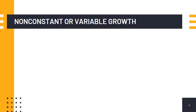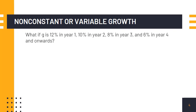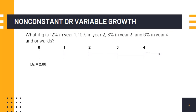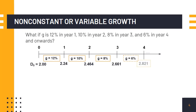In real life, growth rates are rarely constant. For non-constant or variable growth, consider the following growth rates: 12 percent in year one, 10 percent in year two, 8 percent in year three, and 6 percent in year four and onwards. We first compute dividends each year: D-sub-zero is $2.00; D-sub-1 is $2.00 × 1.12 = $2.24; D-sub-2 is $2.24 × 1.10 = $2.464; D-sub-3 is $2.464 × 1.08 = $2.661; D-sub-4 is $2.661 × 1.06 = $2.821. From year four onwards, the constant growth rate is 6 percent.